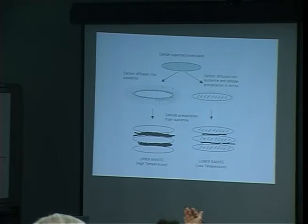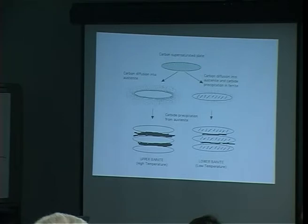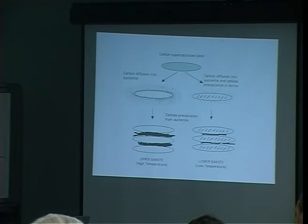Q&A on titanium: martensite transformation in titanium uses exactly the same mechanisms. However, titanium is a substitutional alloy only — all the important atoms are substitutional. The analogy with bainite breaks down because once you have substitutional elements partitioning, that means you have sufficient diffusion to just have a reconstructive transformation.